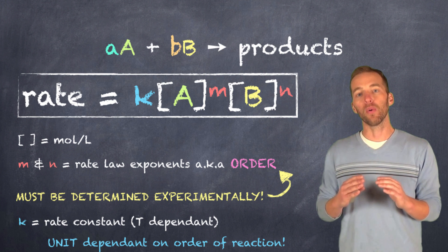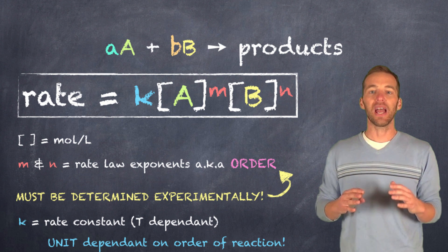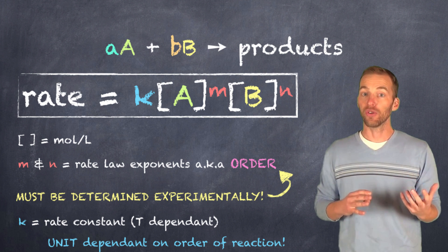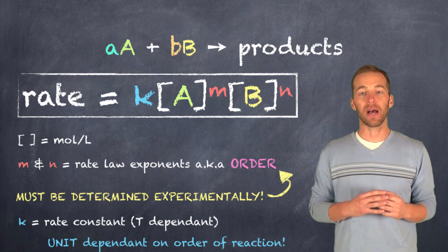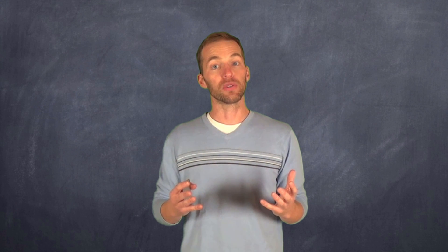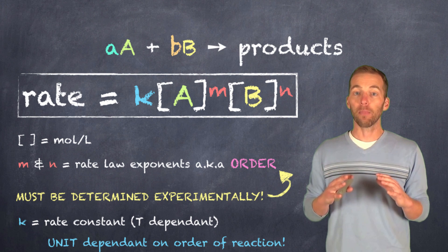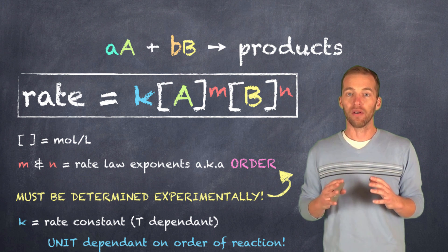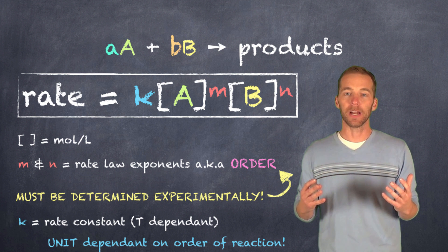And it's important to note that the order, and then ultimately the value for K, is dependent on experimental data. That is, as you've noticed, we can't use the coefficients from the balanced chemical equation, nor can we use our stoichiometry to help us figure out the overall orders of these particular reactants. We have to use experimental data.